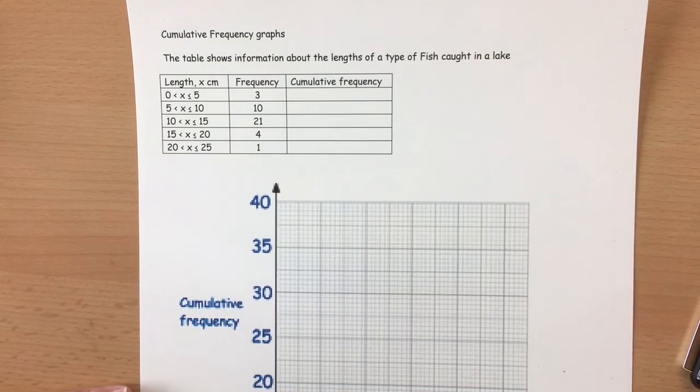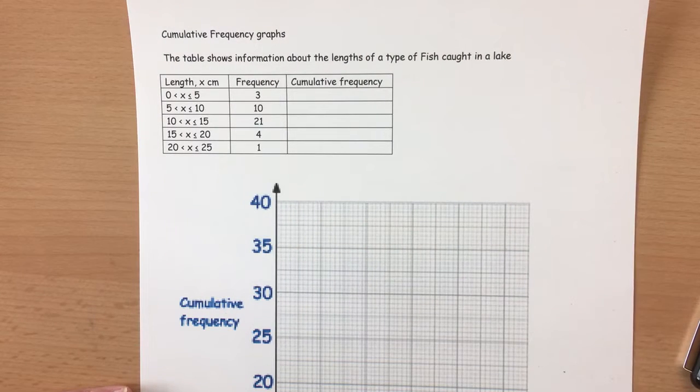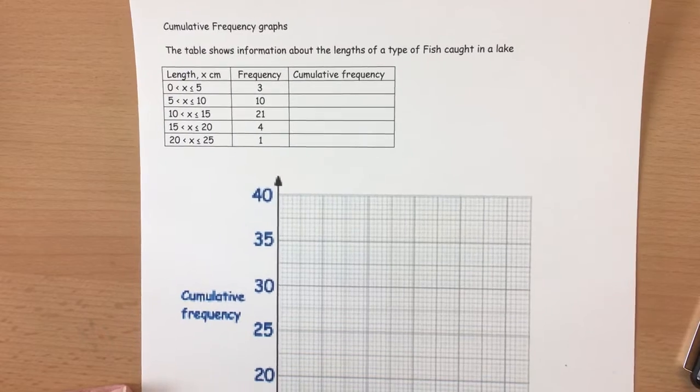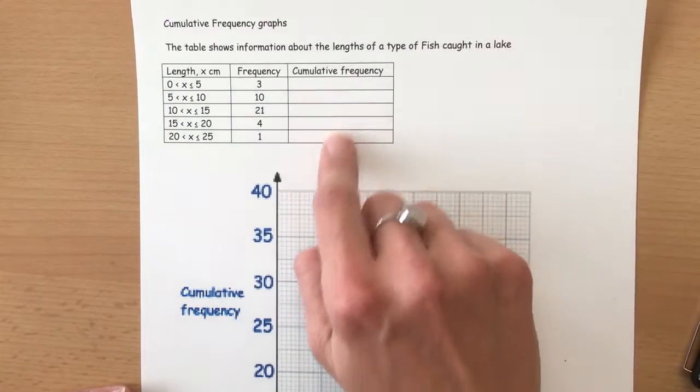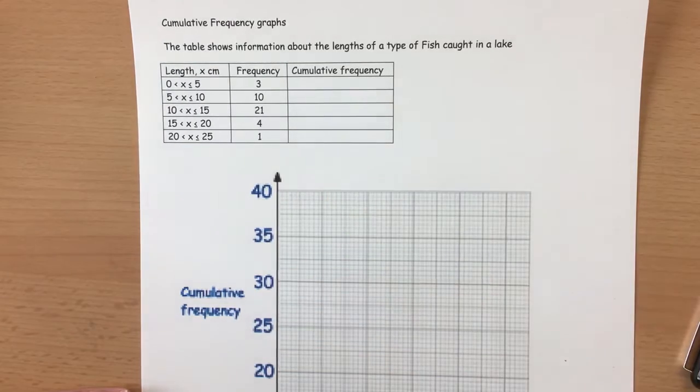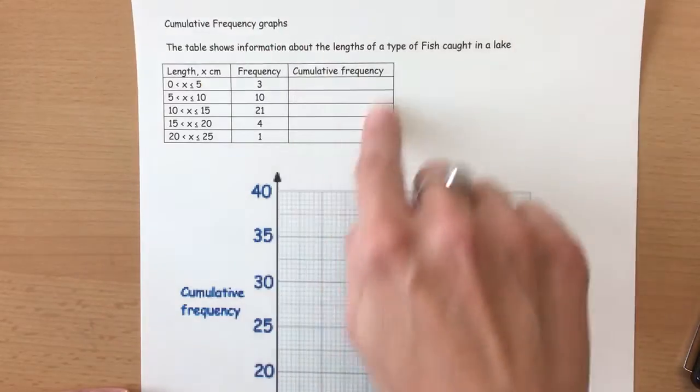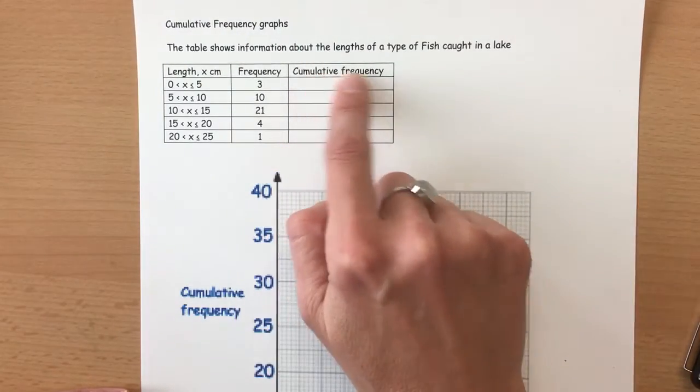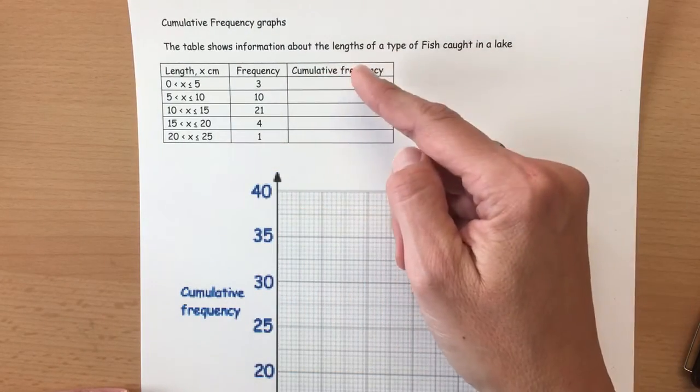When we have to draw a cumulative frequency graph, the most important thing to think about is the cumulative frequency column. If you're looking at an exam they'll give you this extra column, if not then you have to remember to actually add an extra column. This means you are accumulating the frequencies.